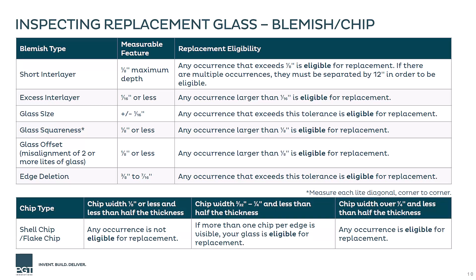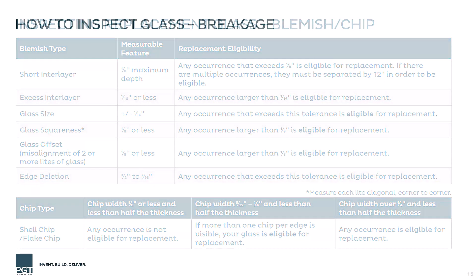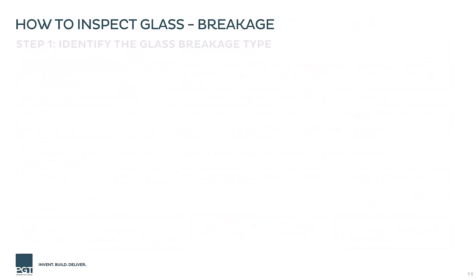Other things to inspect include checking if your laminated unit has the vinyl interlayer recessed into the glass or if it is hanging out past the edge. Is the size of the glass correct? What about chips or other blemishes along the edge of the glass? Replacement eligibility for these imperfections can be found in the table. If your glass has some kind of breakage on it, determining what kind of break occurred will help in knowing if it is eligible for replacement.